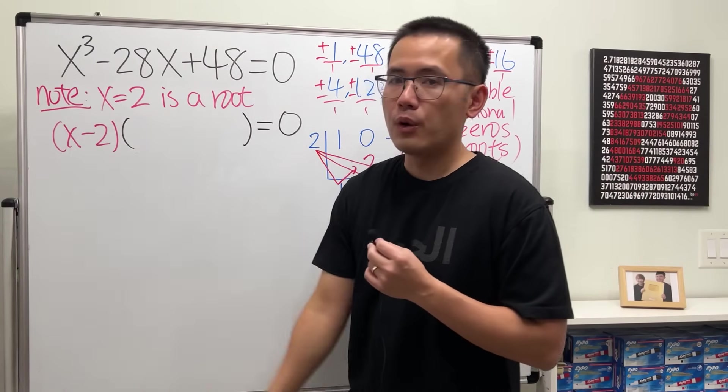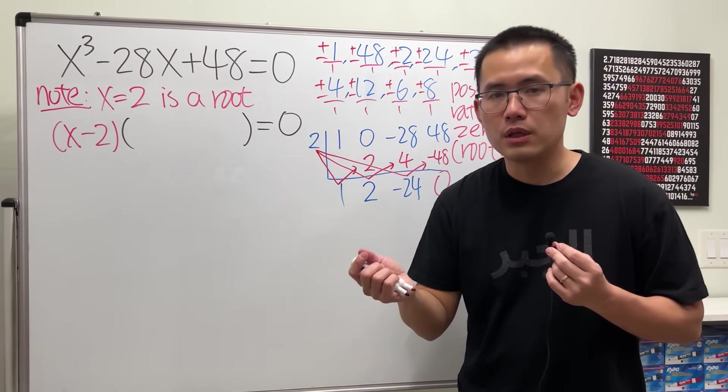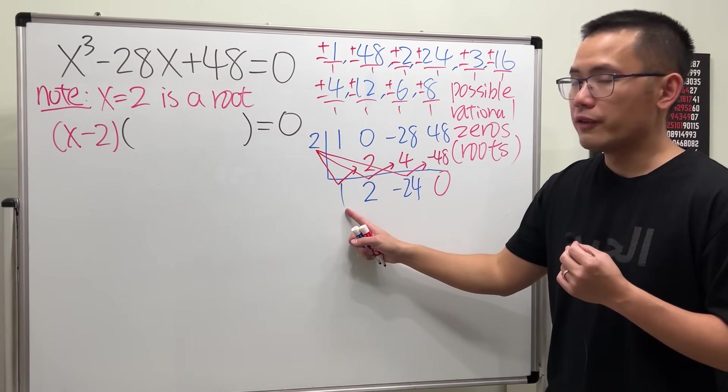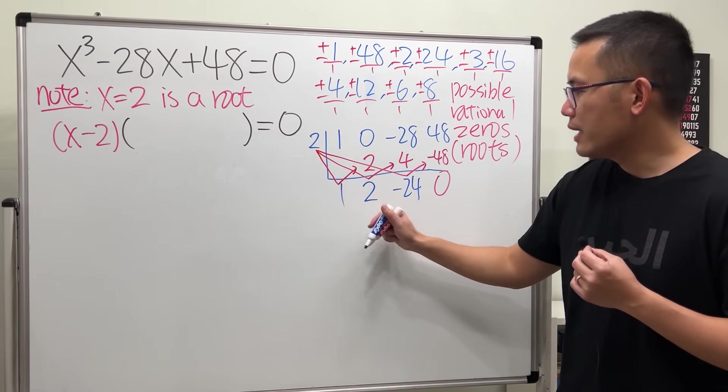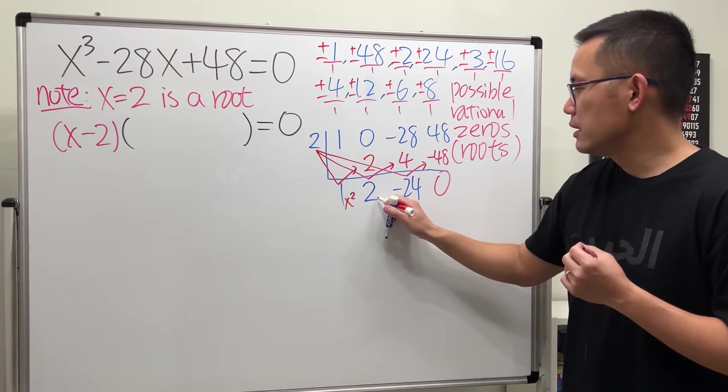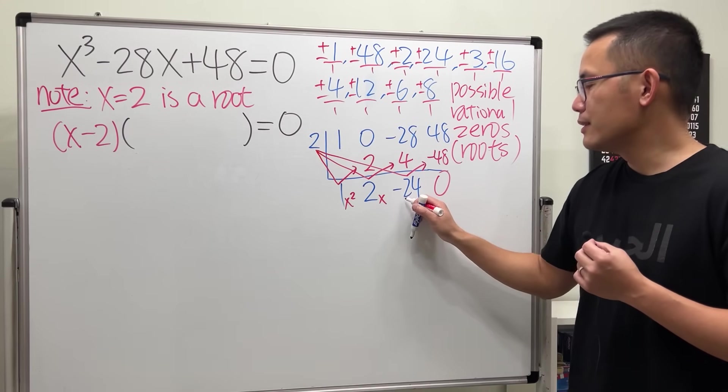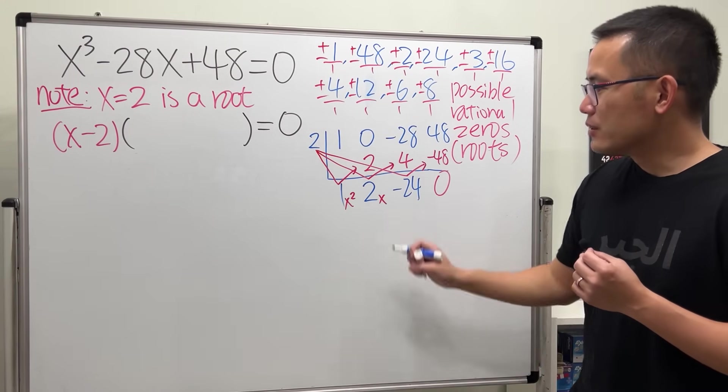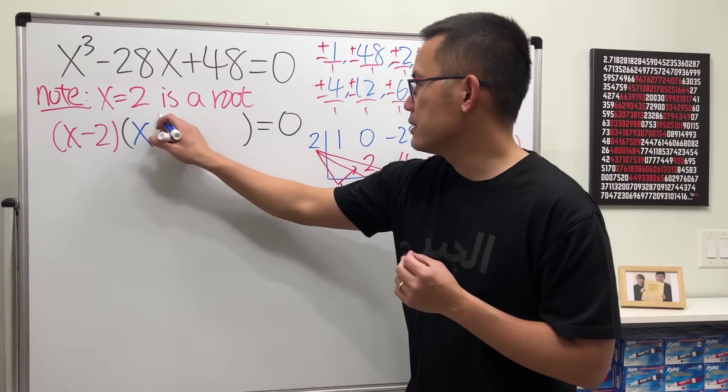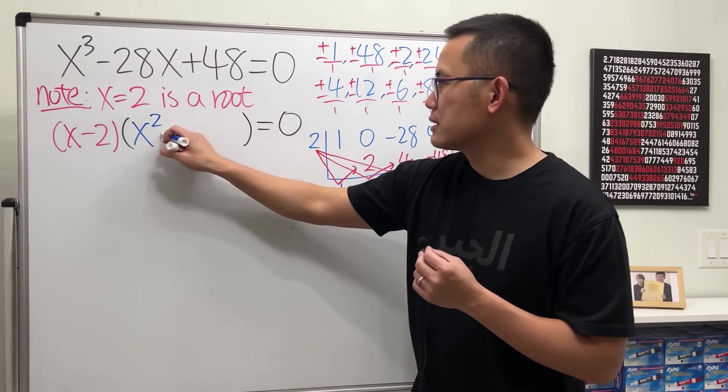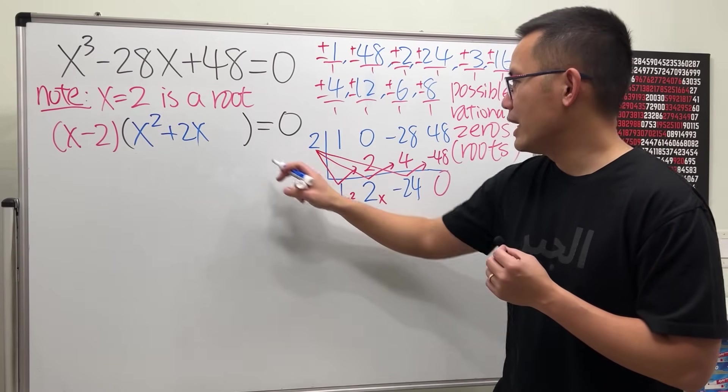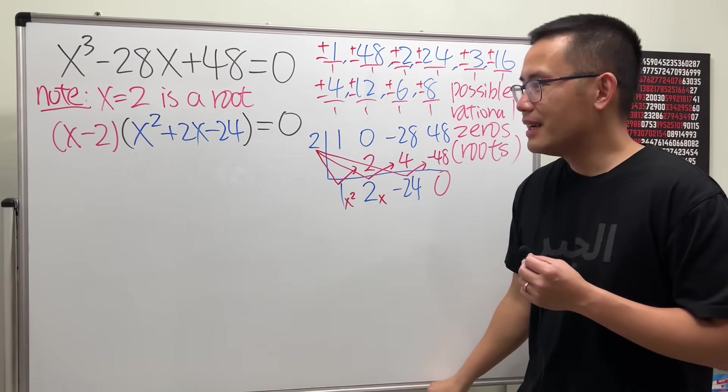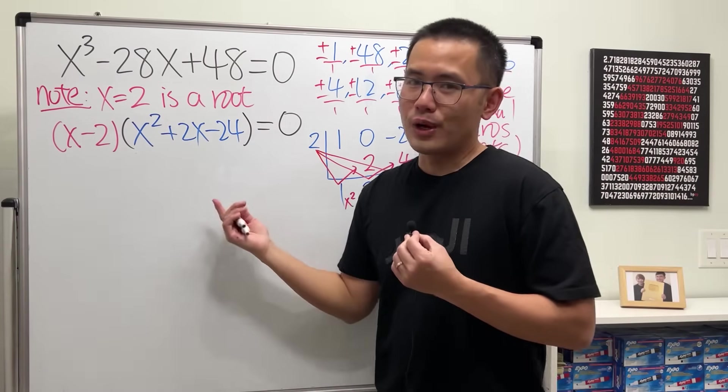So this right here is going to give us a quadratic factor, because originally we have x cubed and we divided by x to the first power, so the power goes down by 1. Therefore it's a quadratic, and the coefficients of the factor are here: 1x squared, 2x, and then minus 24. Without the x, and then we made it zero, so I'm just going to put down x squared positive 2x, so that's plus 2x, and then lastly we have the minus 24, just like that.